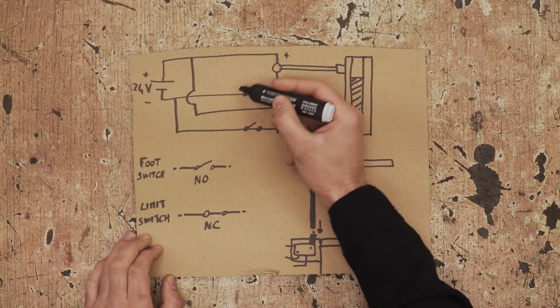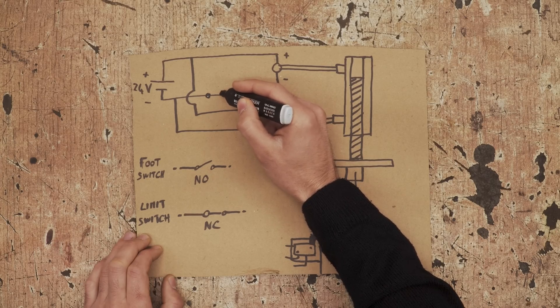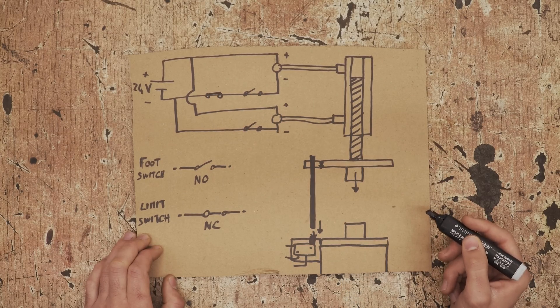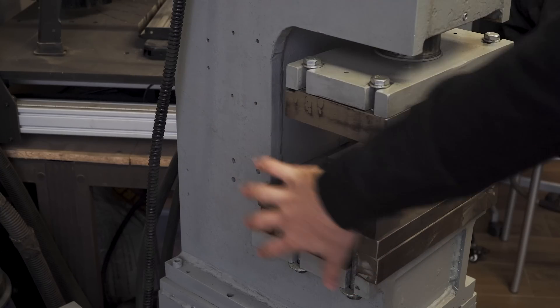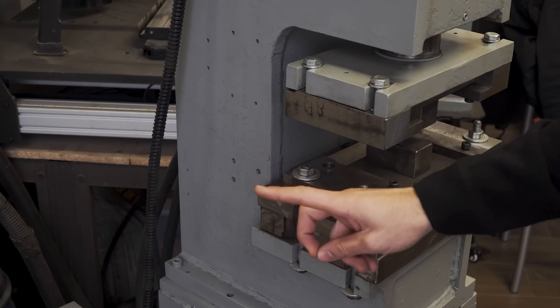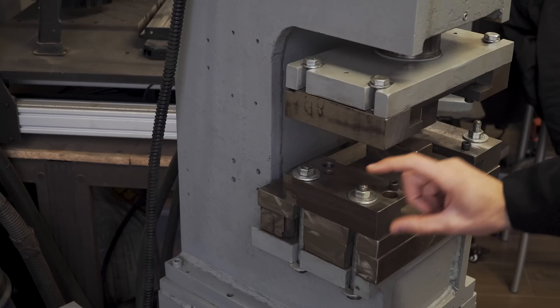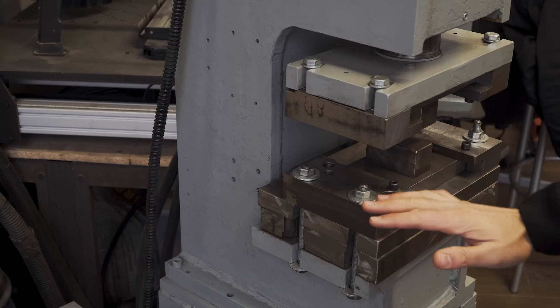I think the limit switch can go anywhere here, but I'll put it in series with the foot switch that controls the pressing movement. I'm planning to fit things on this side, so first thing first, let's make the adjustable rod that will set at what thickness the press stops.